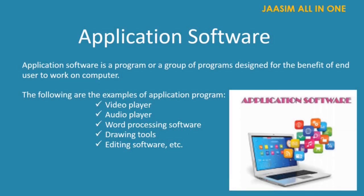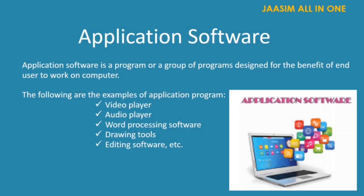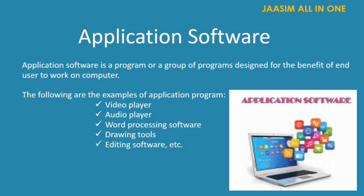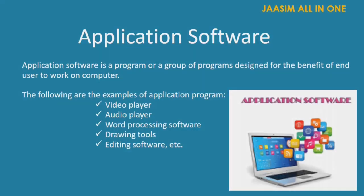Application software is a program or group of programs designed for the benefit of end-users to work on a computer. End-user means the user of a computer. For example, video player, audio player, word processing software like MS Office, Star Office, Libre Office, drawing tools like Photoshop, CorelDRAW, PageMaker, and some editing software. These are examples of application software.